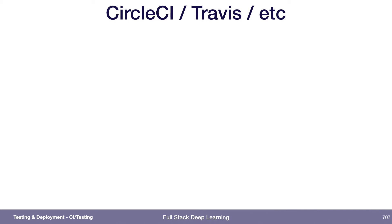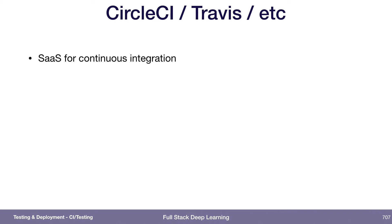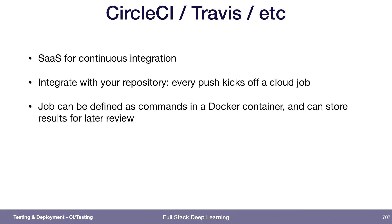CircleCI, Travis, stuff like that — software as a service. You basically integrate it with your GitHub, GitLab, or Bitbucket or whatever repository, such that every time you commit to it and push to the repository, it kicks off a job somewhere that runs it. The jobs are usually defined as code, but they run in the Docker container. And then they can also store some results in some kind of artifact repository that you can log into and view the results.